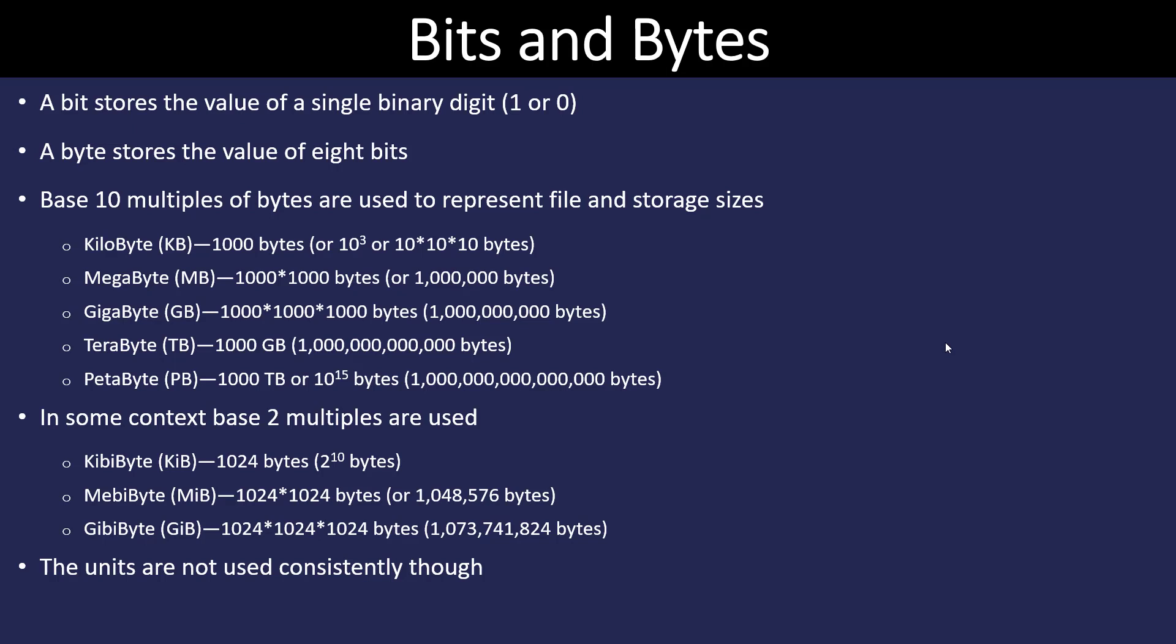Let's dive into the bits and bytes of the computer world. A bit is a single binary digit, either a 1 or a 0. A byte has 8 bits in it. If you remember back to that table I showed you, it had 8 entries, 2 to the 0 to 2 to the 7th. That's going to be a byte.